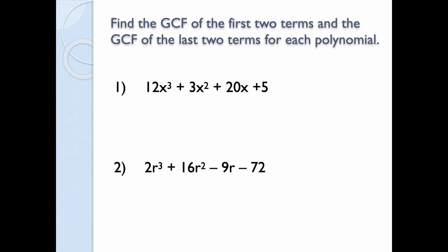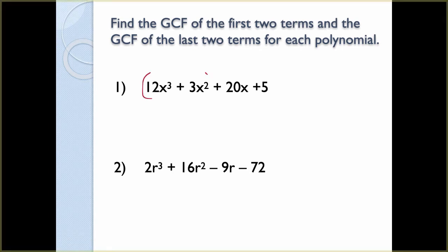Find the GCF of the first two terms and the GCF of the last two terms for each polynomial. For the first: what is the GCF of 12x³ and 3x²? The largest number dividing evenly between 12 and 3 is 3, and the lowest exponent of the common variable x is 2, so x² — that's the GCF of the first group. Then we have 20x and 5: what evenly divides out of both? Just 5, since the second term has no variable.